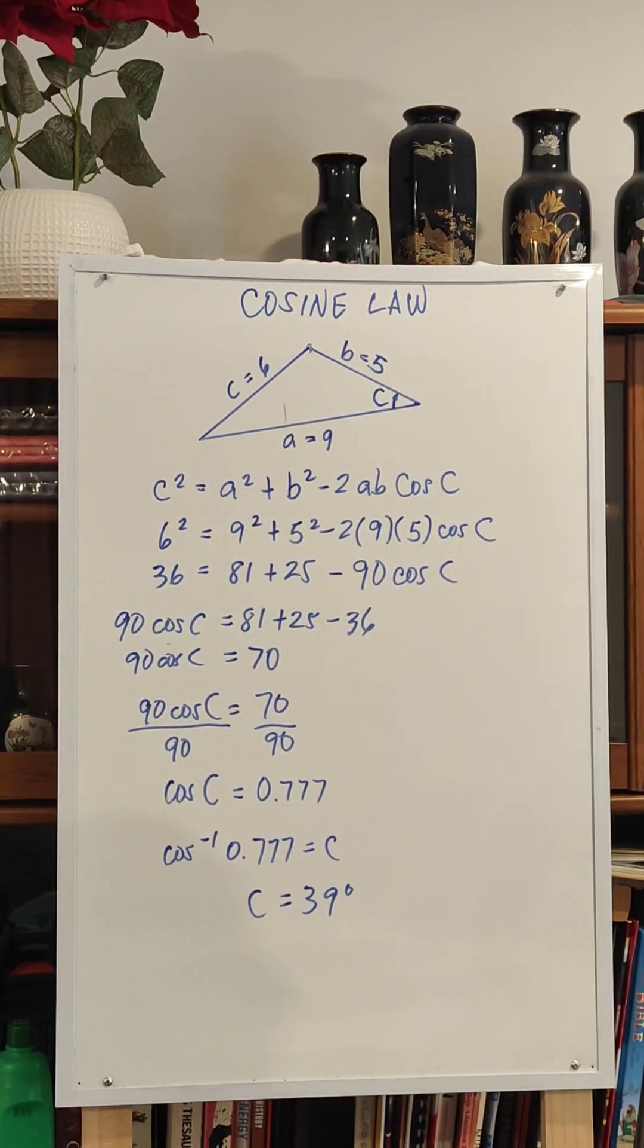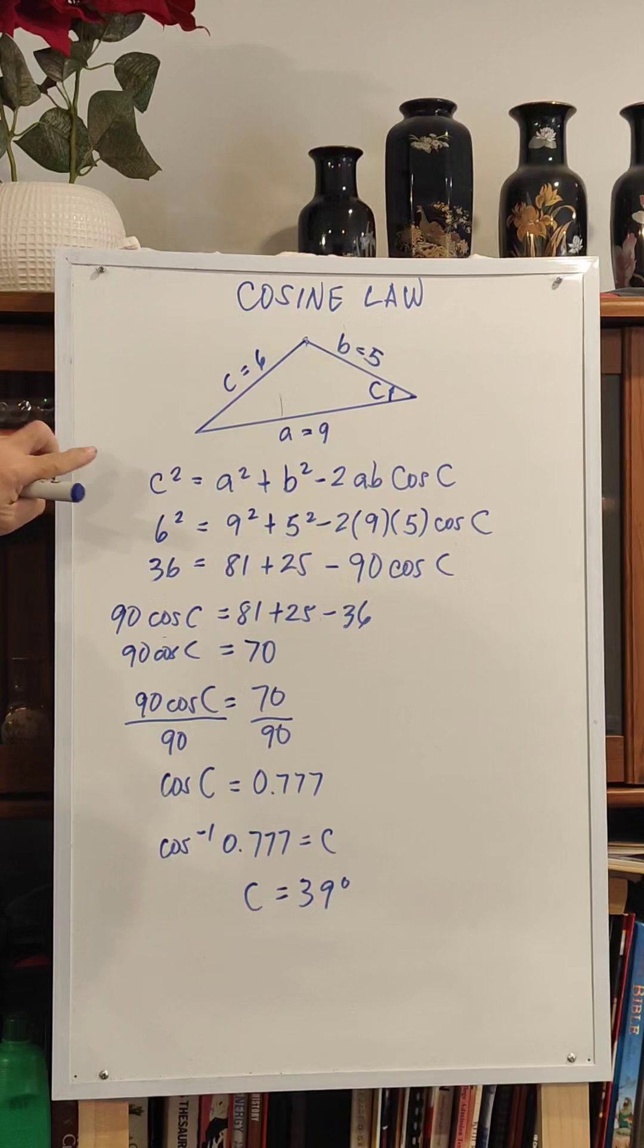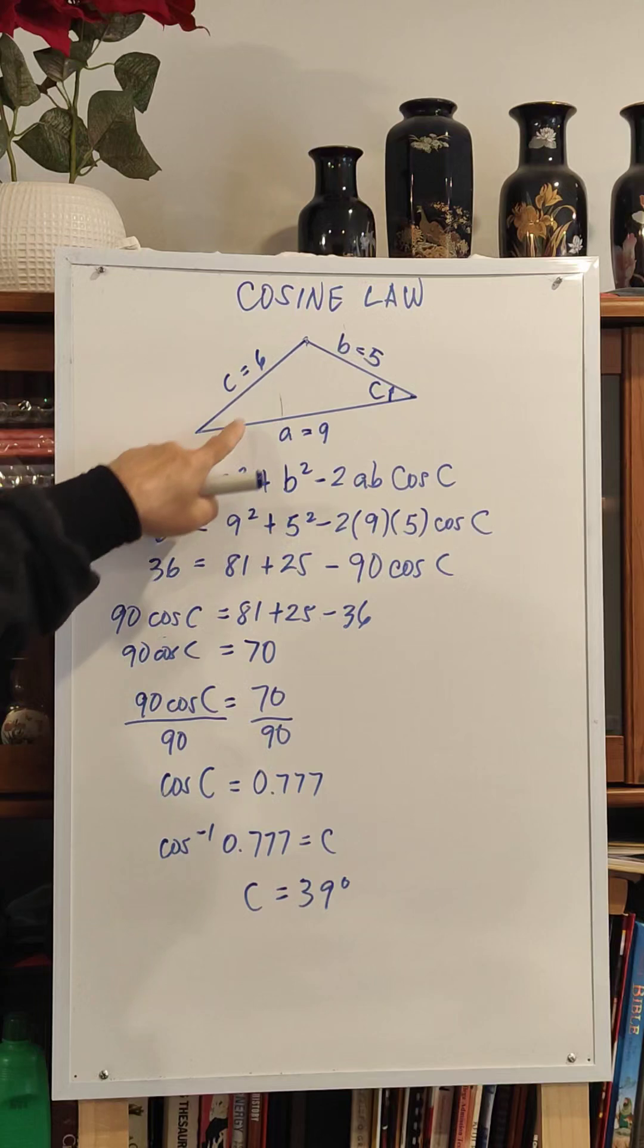If you have a triangle given three sides, you can solve for the angle in the triangle using cosine law. This is the formula for cosine law, so you just plug in the values. C is equal to 6, a is equal to 9, and b is equal to 5.